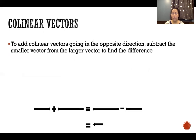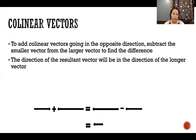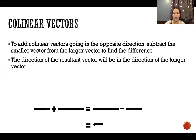To add collinear vectors going in opposite directions, we subtract the smaller one from the larger one to find the difference. The direction of the resultant vector will be the direction of the longer vector. To subtract a vector, we flip it backwards — flip it the opposite direction. So we flip that smaller vector backwards, subtract it from the larger one, and that difference pointed in the direction of the larger vector is our resultant vector.